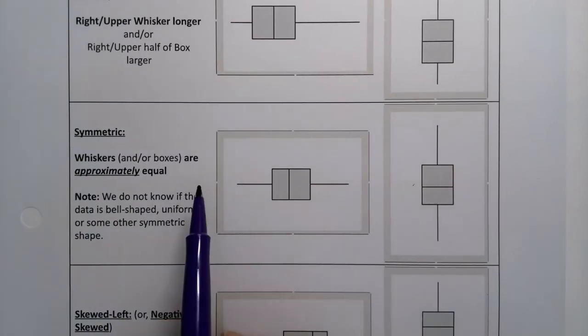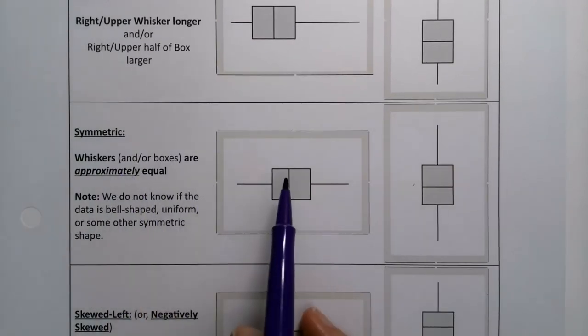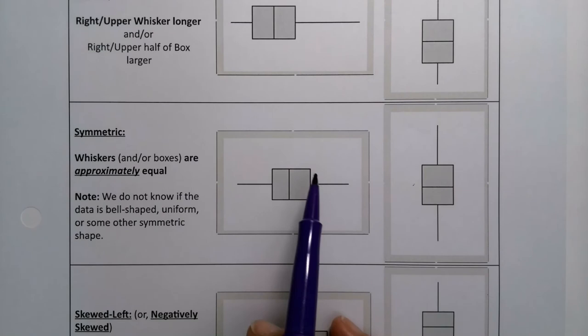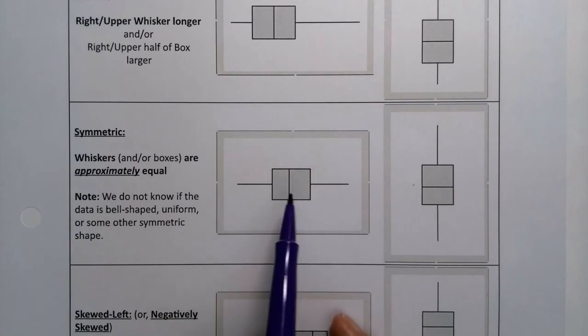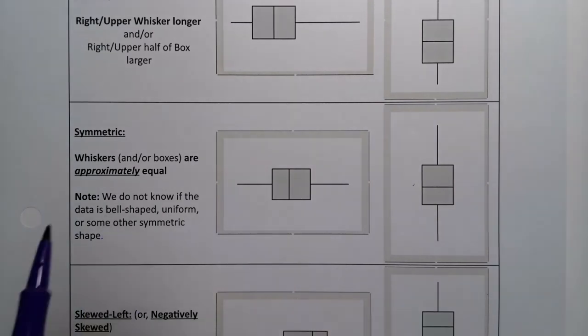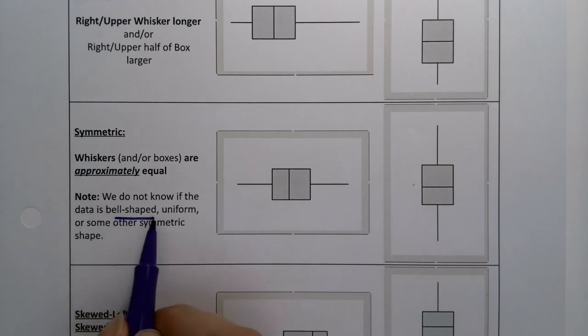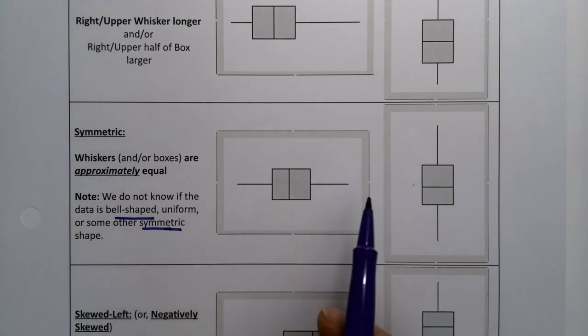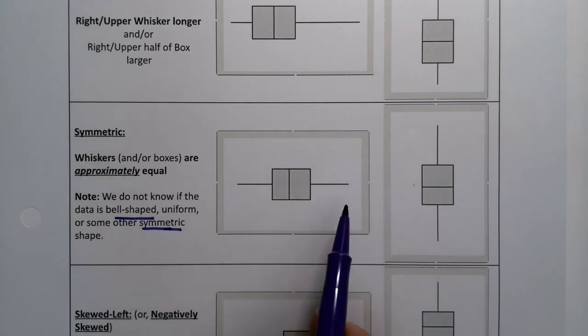When it's symmetric, the whiskers and the boxes are approximately equal. That's not perfect necessarily, but they should be roughly equal. We don't know if it's bell-shaped or uniform. Symmetric, there's actually a lot of symmetric shapes, but we do know that it's roughly symmetric.